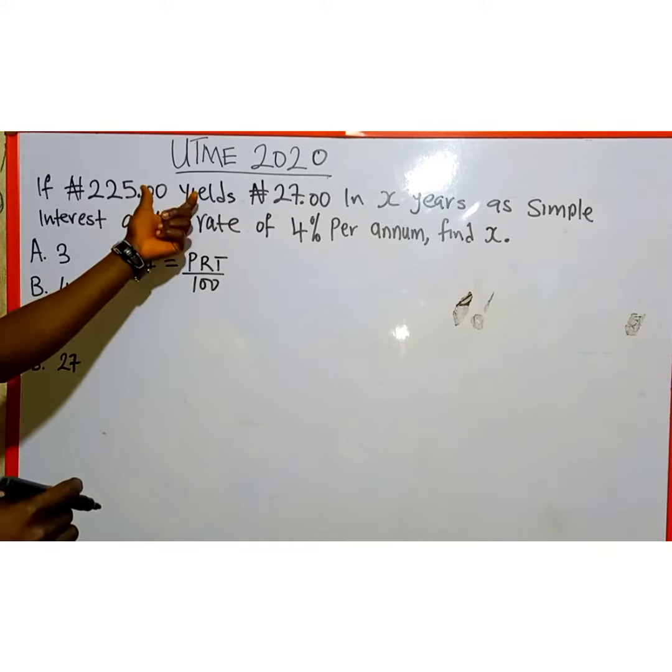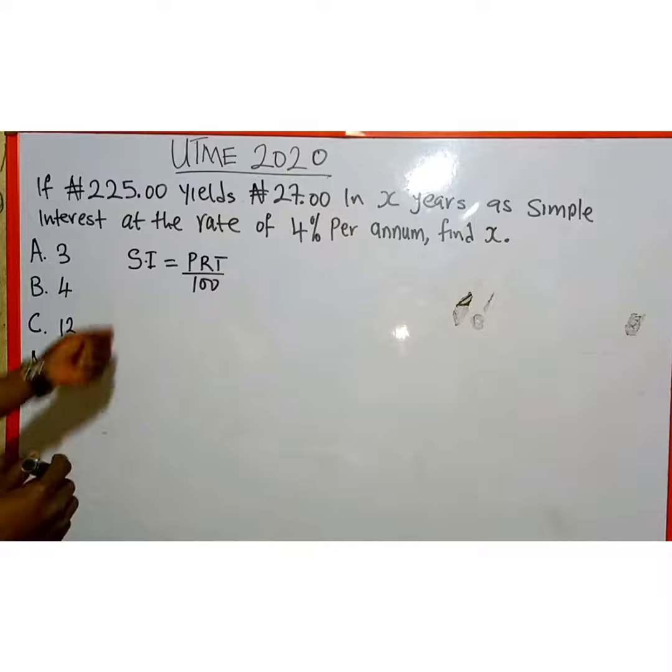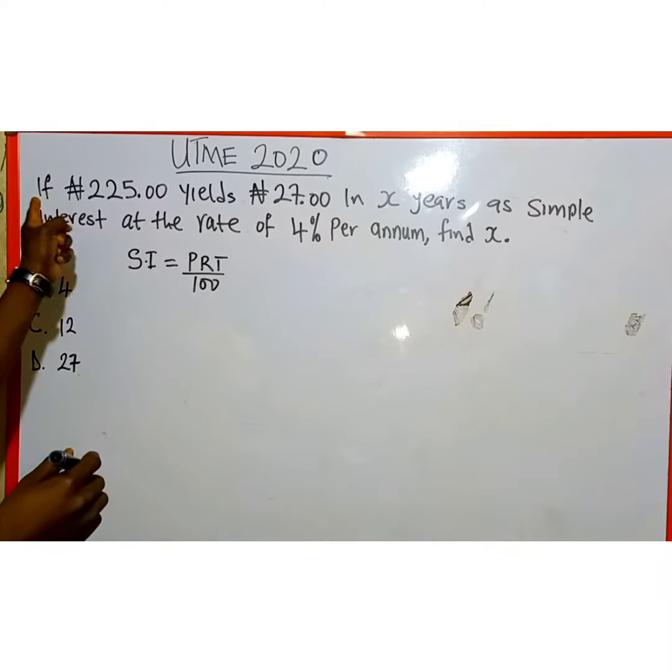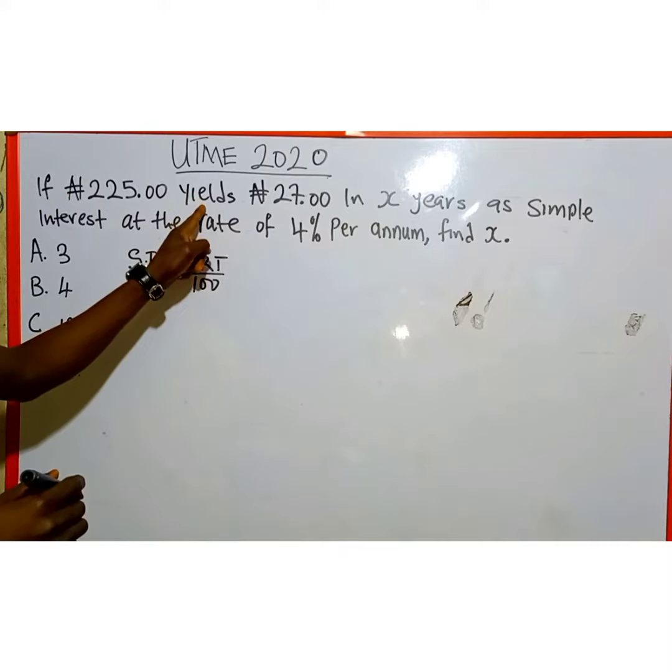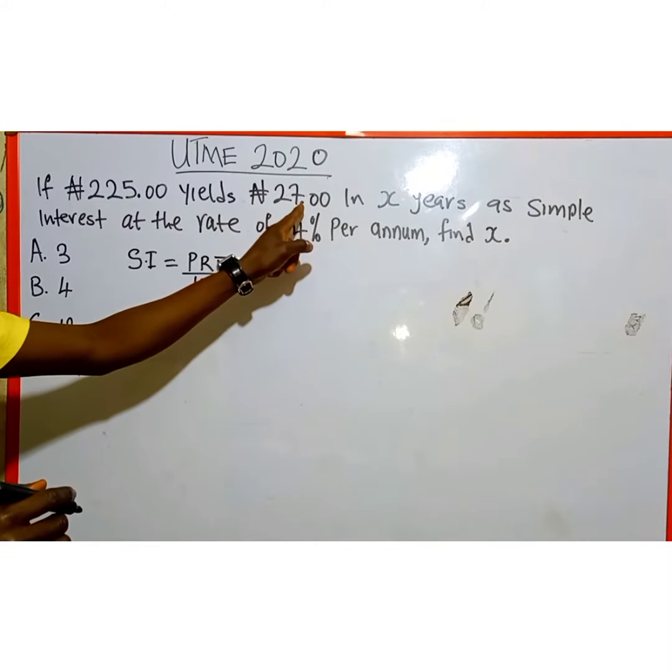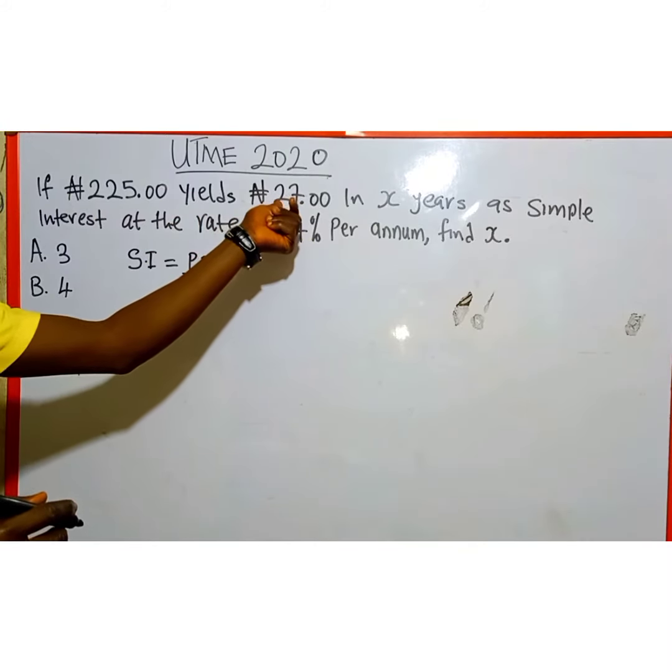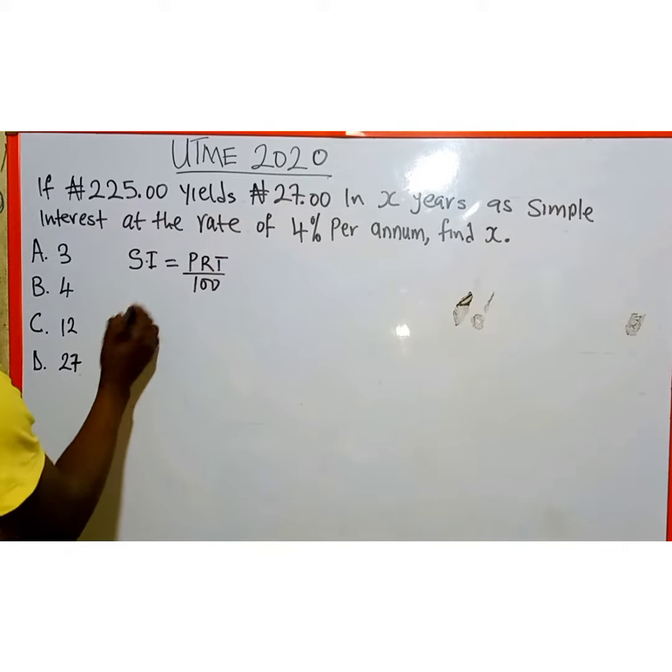From this question, we can substitute into this formula. My simple interest, if you look at the equation, 225 naira yields the interest of 27 naira. Therefore, simple interest here is 27.